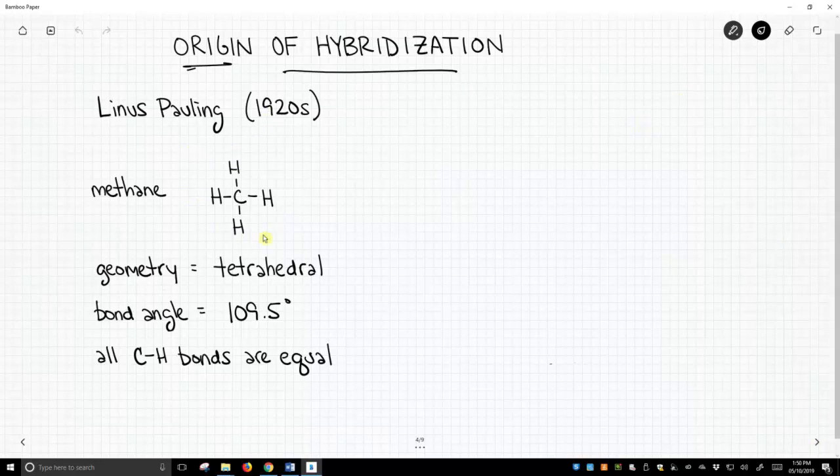He knew that methane was a simple molecule with a formula of CH4. It had an atomic geometry about carbon of tetrahedral. They knew that carbon had bond angles about it, the HCH bond angles, were 109.5°. And lastly, they knew that all the CH bonds were equal.